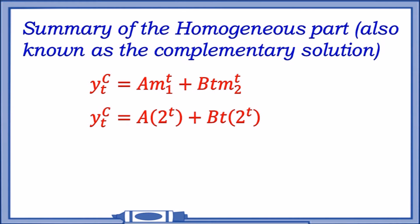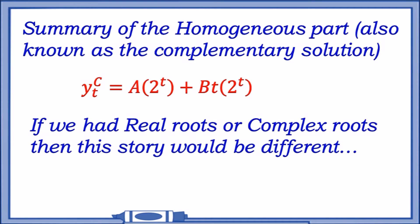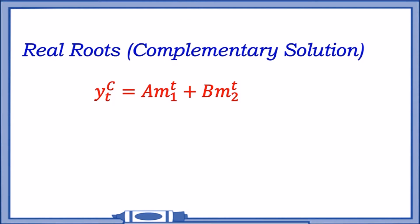These are the other cases. If we had real roots or complex roots, the story would be different. We consider different things. In particular, if we had real roots—in other words, two different solutions for m—the complementary part would equal the same thing except there's no t.